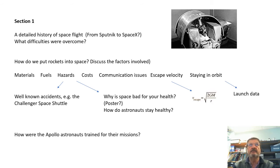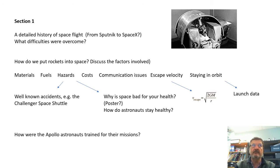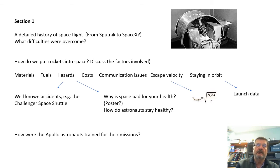How do we put rockets into space? There's lots of information here with many different factors involved: the materials that rockets are made out of, the fuel that's used, and the hazards. Why is sending people into space dangerous? Cover well-known accidents — for example, the Challenger Space Shuttle accident — and put in plenty of detail: what happened, why did it blow up?